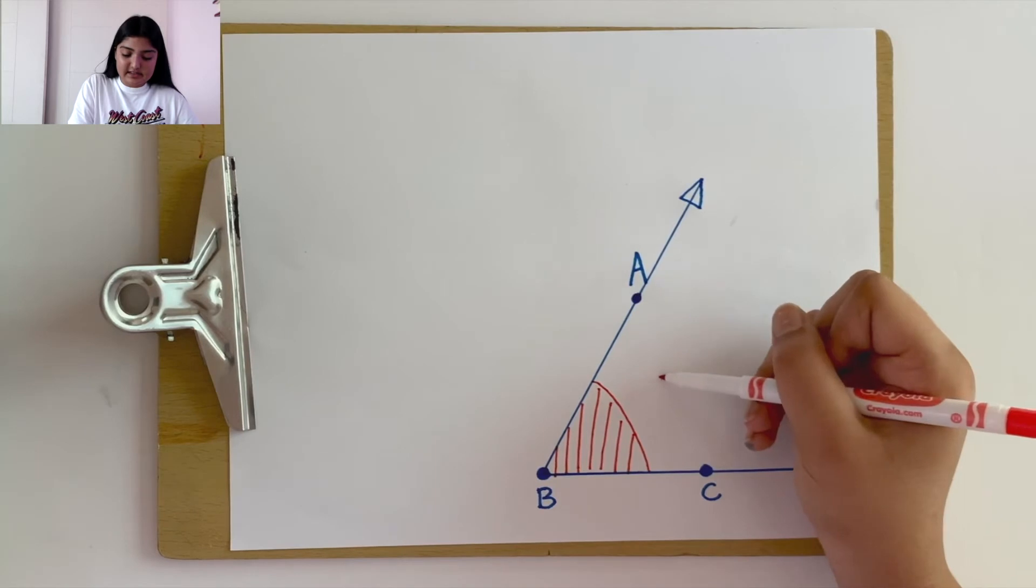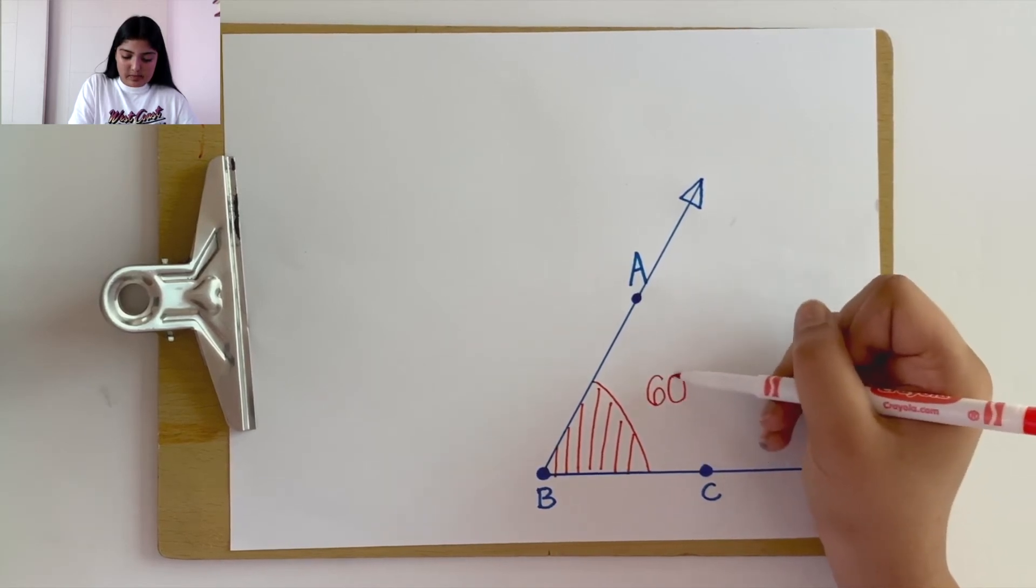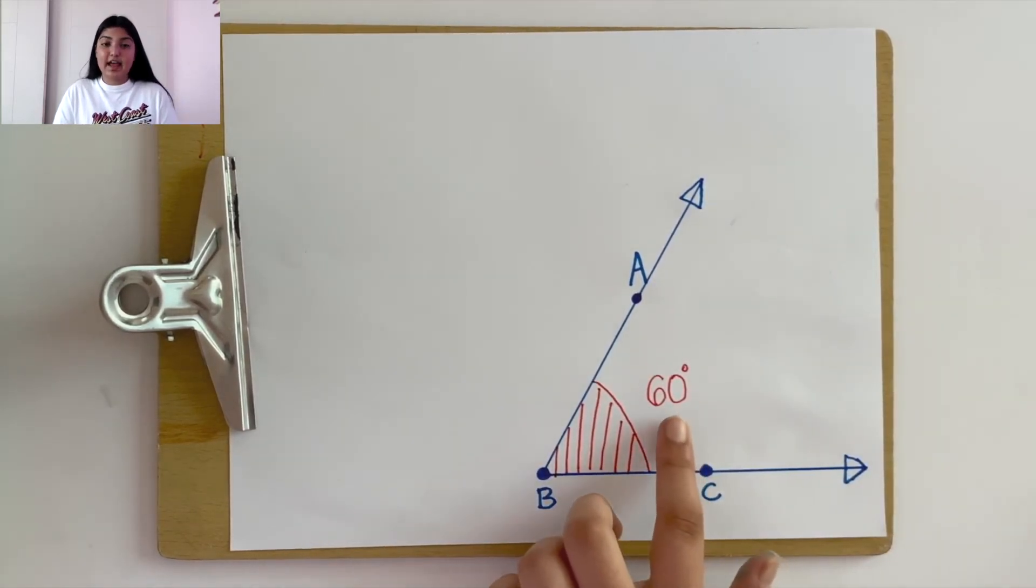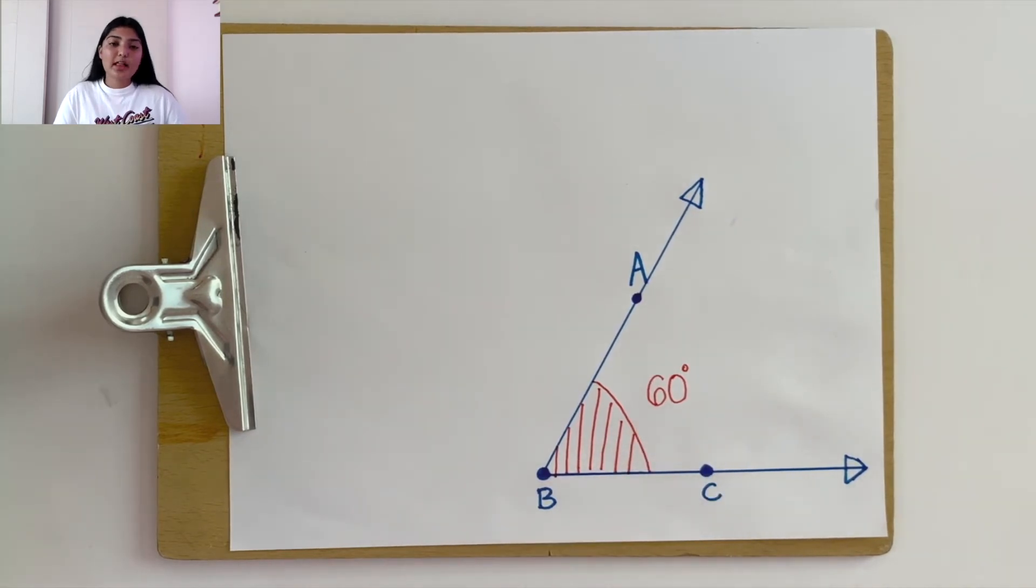This gives us a 60 degree angle. Well how can we write this angle? We can write this angle in multiple ways.